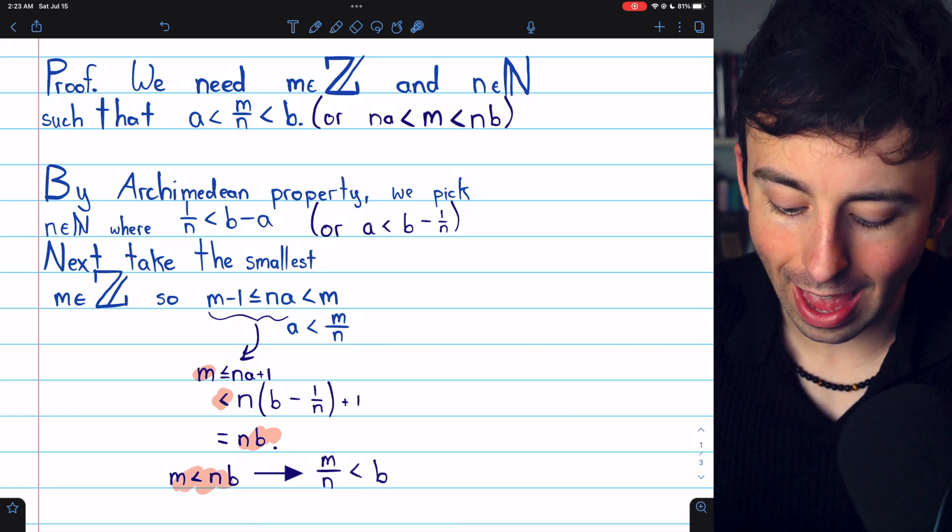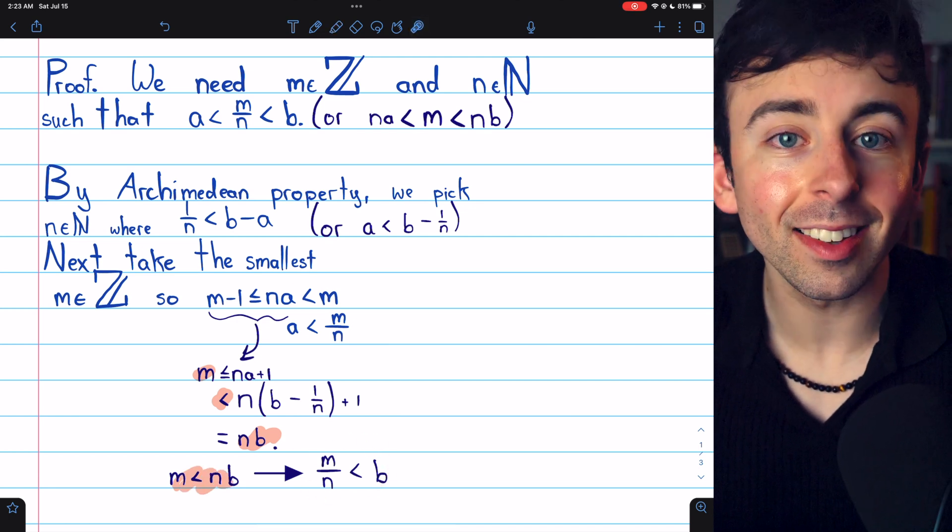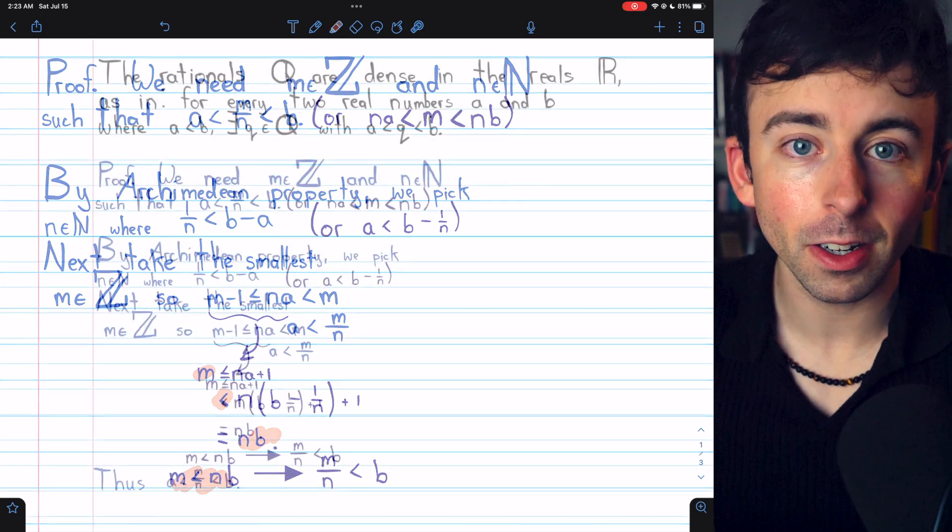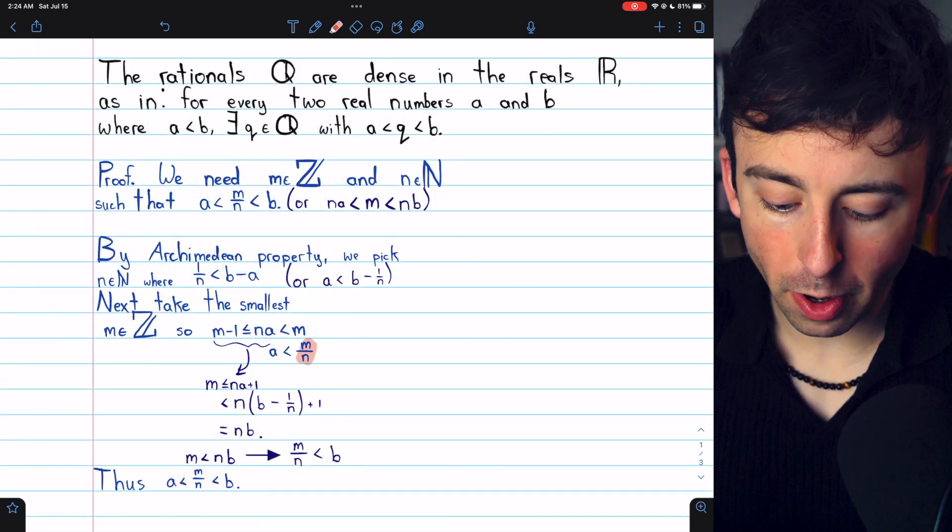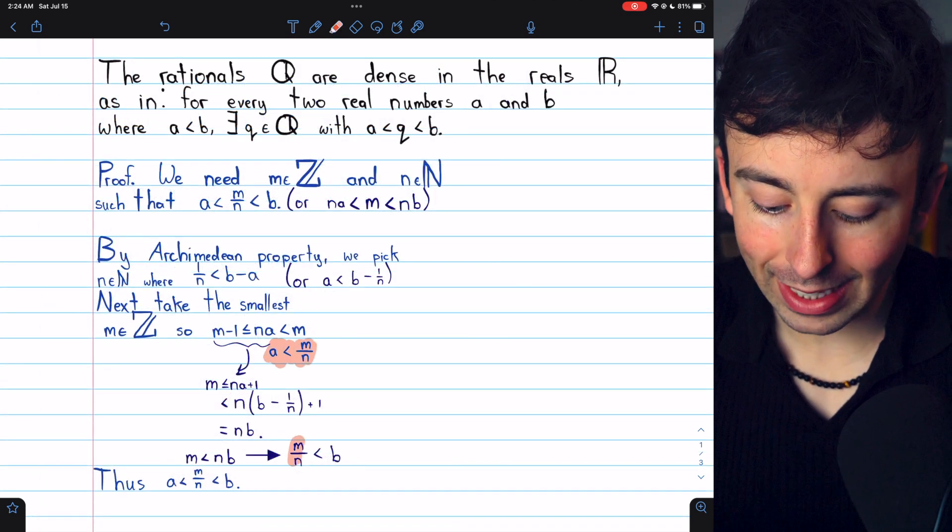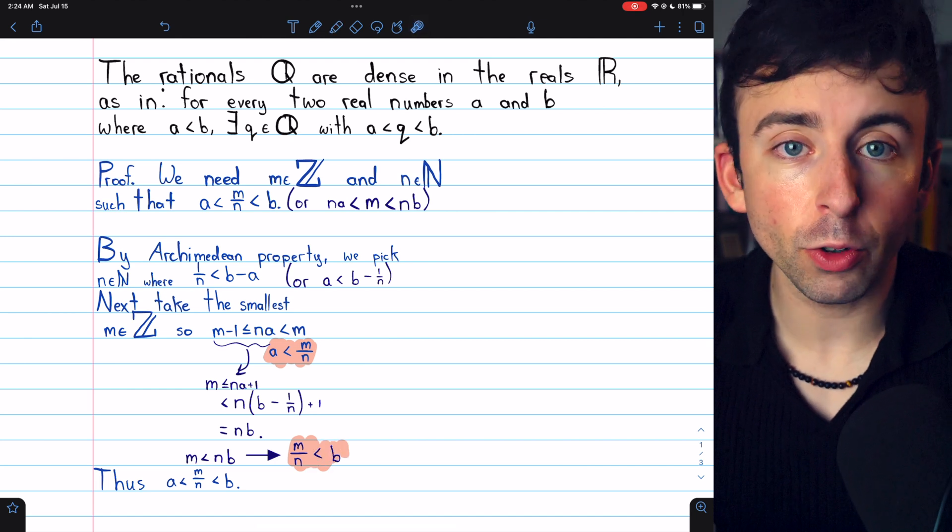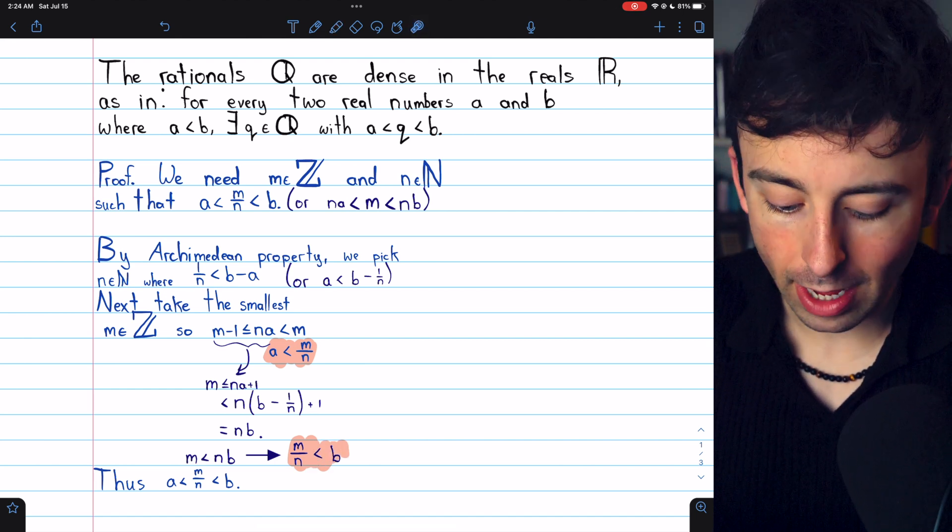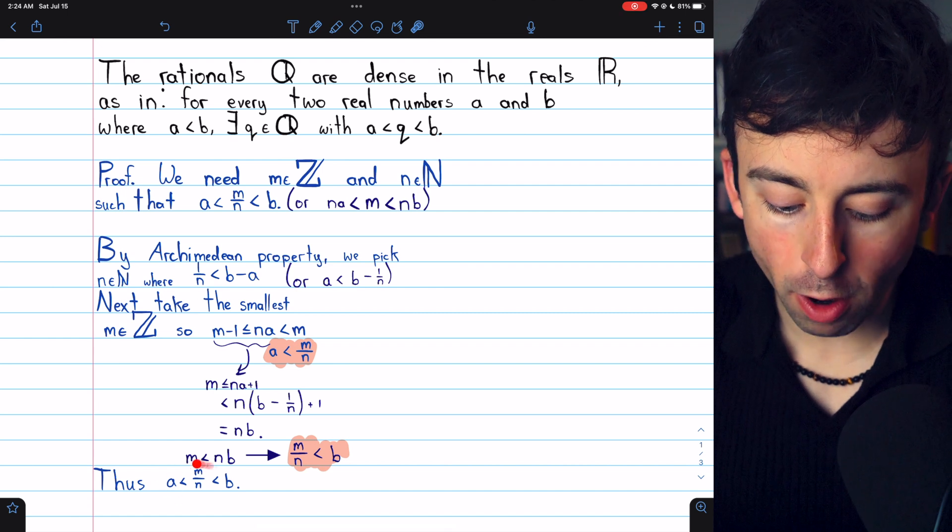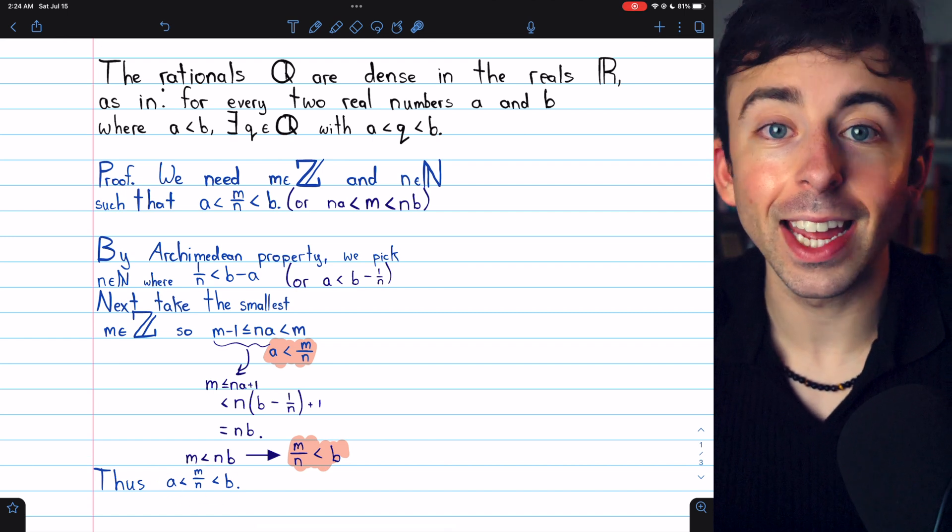And so we have that M is less than NB, which implies that M over N is less than B as desired. So we've demonstrated that M over N is greater than A and less than B. Thus, we've found this rational number, M over N, that is between the arbitrary real numbers, A and B.